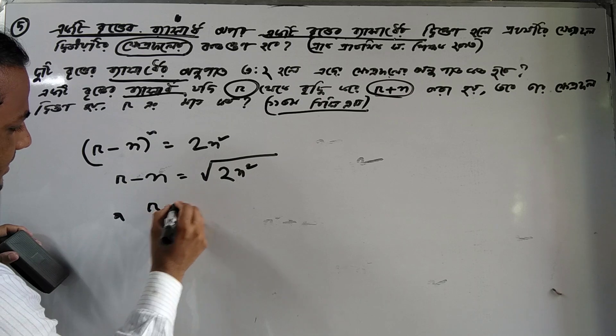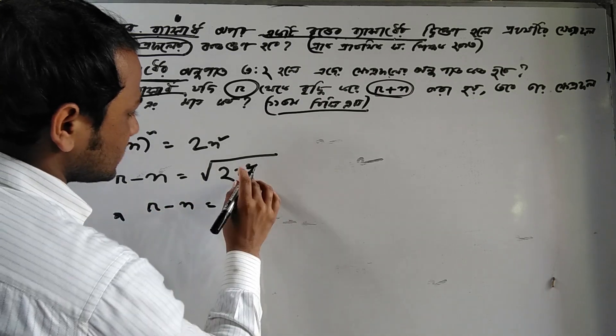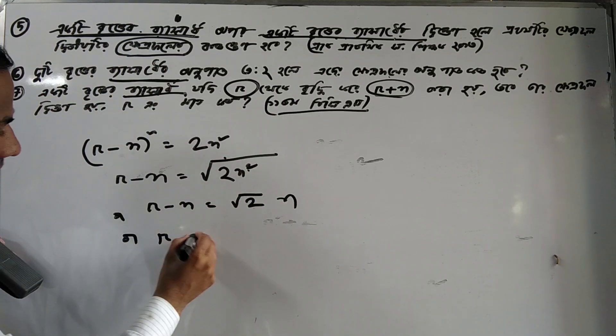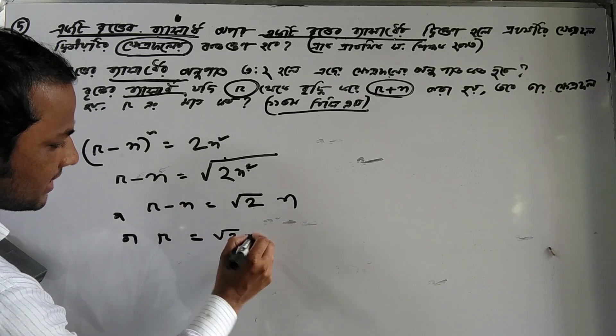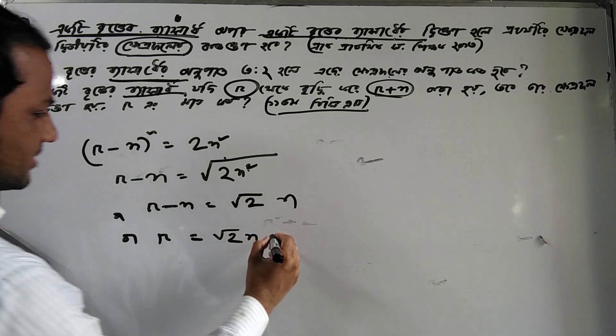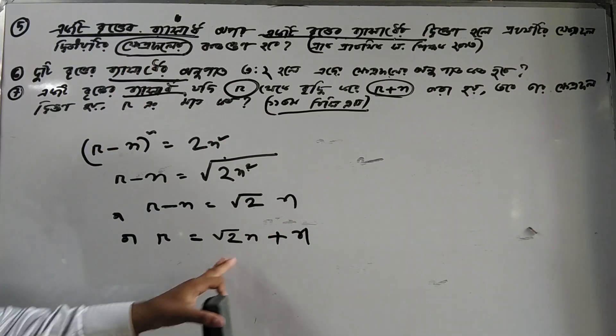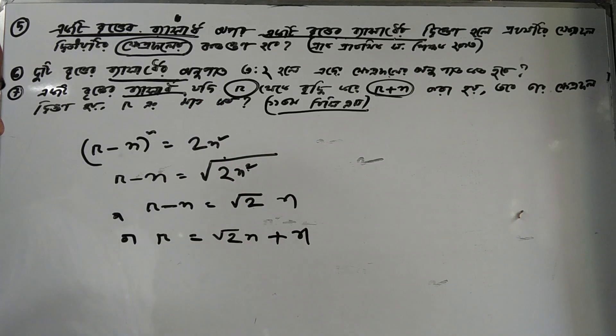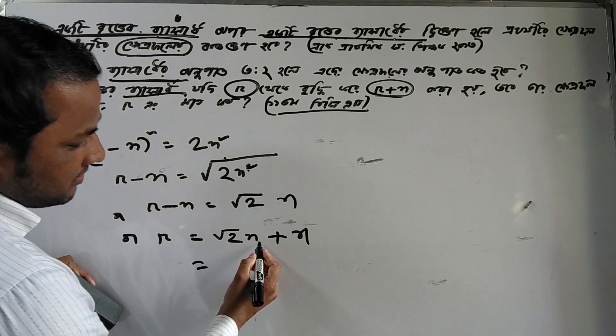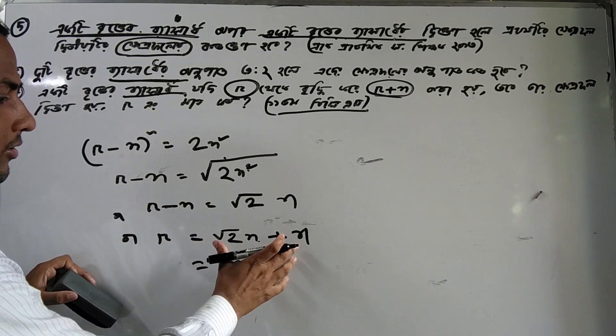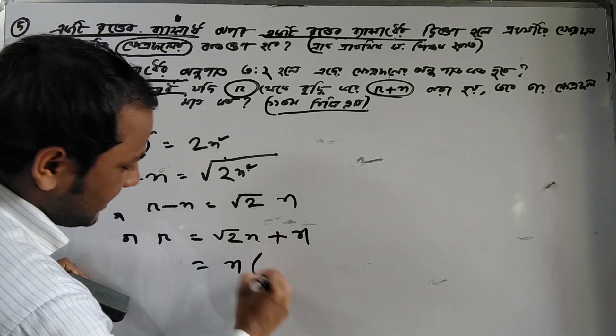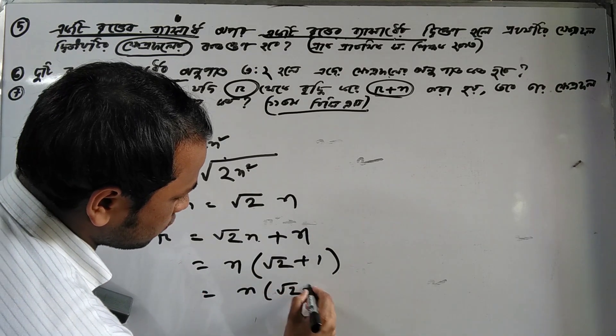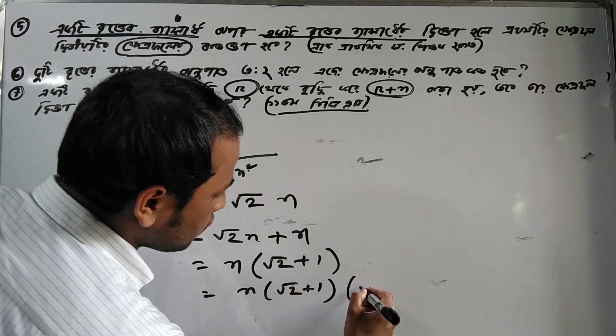Taking the square root of both sides, r minus n equals n. Therefore, r equals n plus n, which gives us r equals 2n. We can also write this as r equals n(root 2 plus 1) by factoring out n.